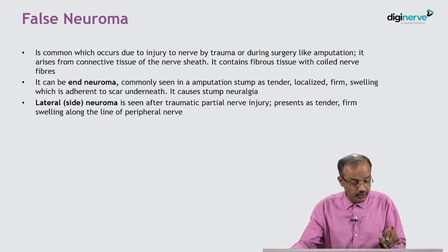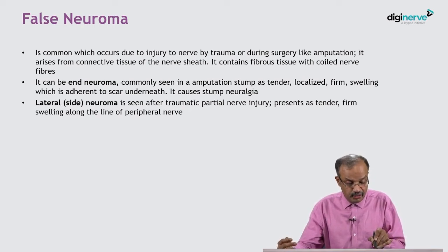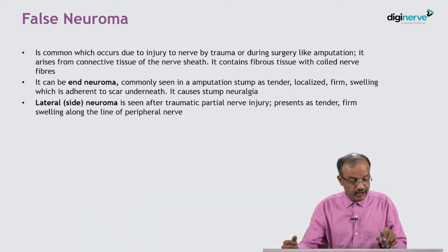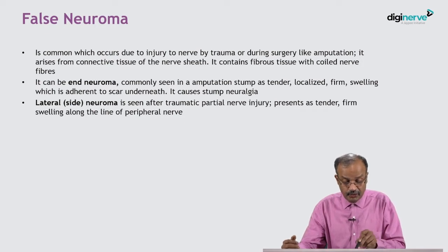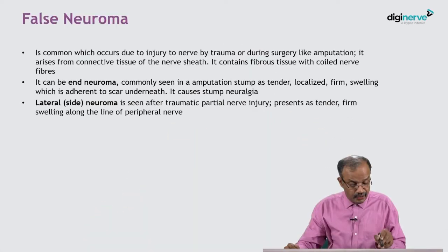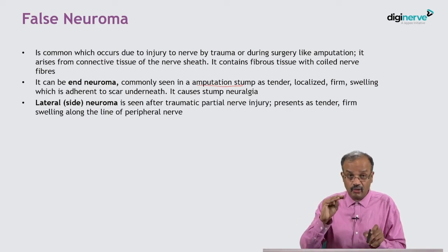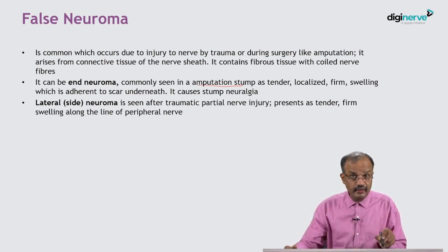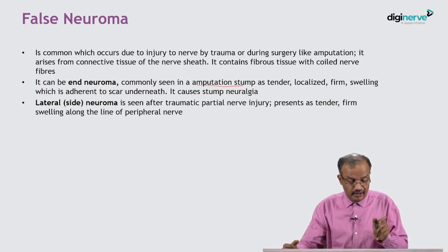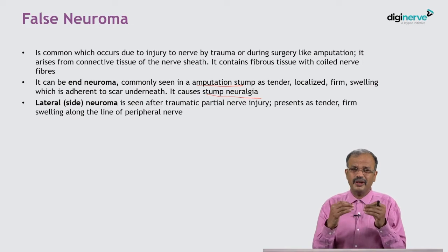False neuroma occurs due to injury to a nerve by trauma or during surgery. During any surgery you may injure the nerve, especially in the limbs during amputation. It arises from the connective tissue of the nerve sheath and contains fibrous tissue with coiled nerve fibers. Based on where the nerve is injured, it is classified as endoneuroma and lateral neuroma. Endoneuromas are commonly seen in the amputation stump as tender, localized, firm swellings adherent to the scar, and cause stump neuralgia.